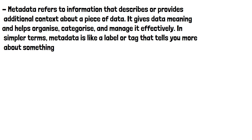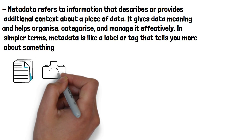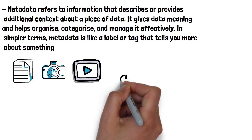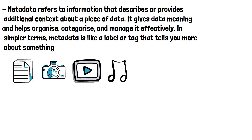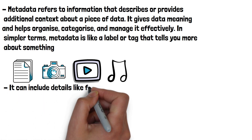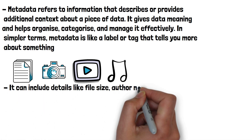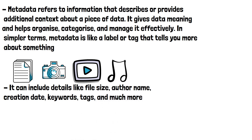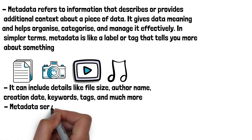Metadata exists in various forms and can be found in different types of digital files, including documents, images, videos and audio files. It can include details like the file size, author name, creation date, keywords, tags and much more.